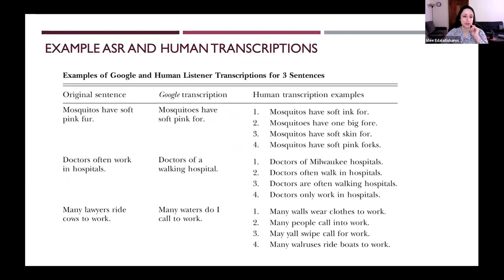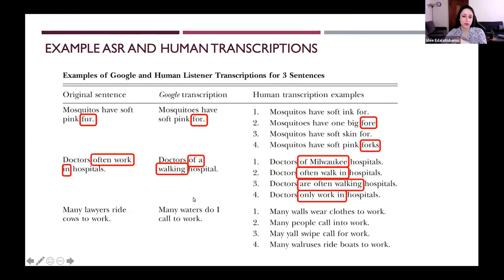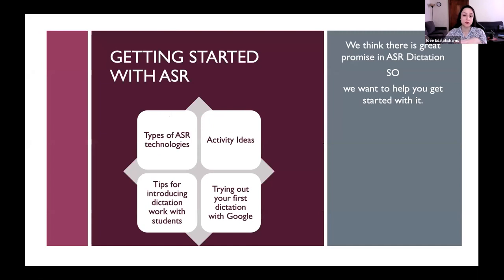Here are a few examples so you can get a better idea of what the study really looked like. In the first example — 'mosquitoes have soft pink fur' — the word 'fur' was recognized as 'four' by Google and was also mistranscribed by two of the human listeners. Similarly, 'doctors often work in hospitals' had a few words mistranscribed by both Google and all listeners in the examples. So again, what Google is doing seems related to what some humans are also hearing.